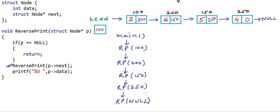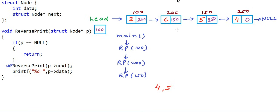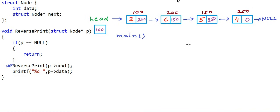The recursion goes on until it reaches the call where the argument is null, at which point it returns. Control comes back to the call with address 250 as argument, and we print the value of the node at address 250, which is four, then five, six, and two. So recursion gives us a way to first traverse the list in the forward direction and then in the backward direction. Let us now see how we can implement the reverse function using recursion.